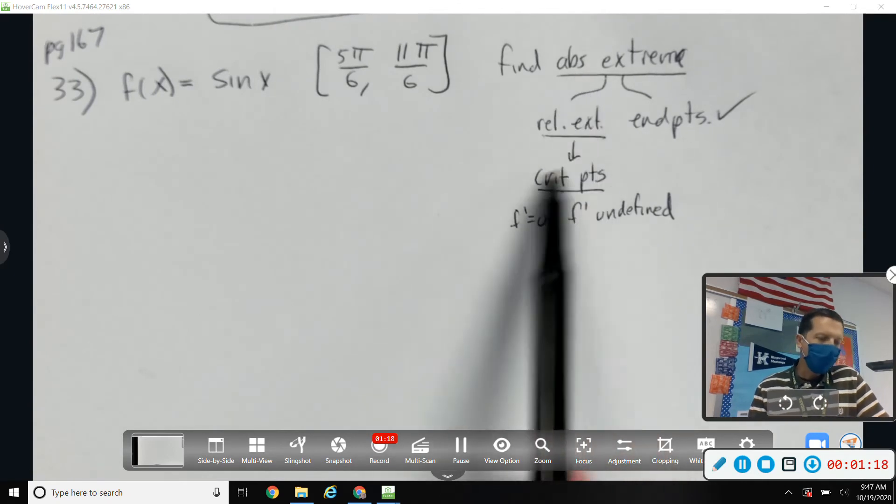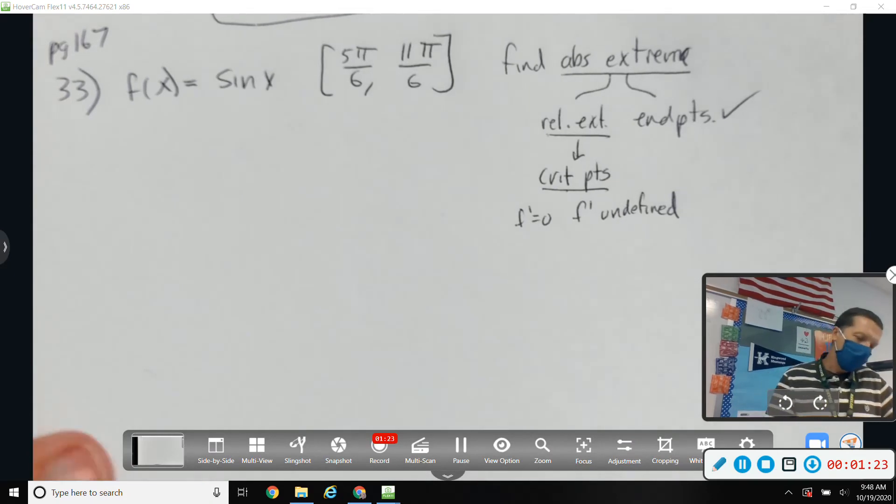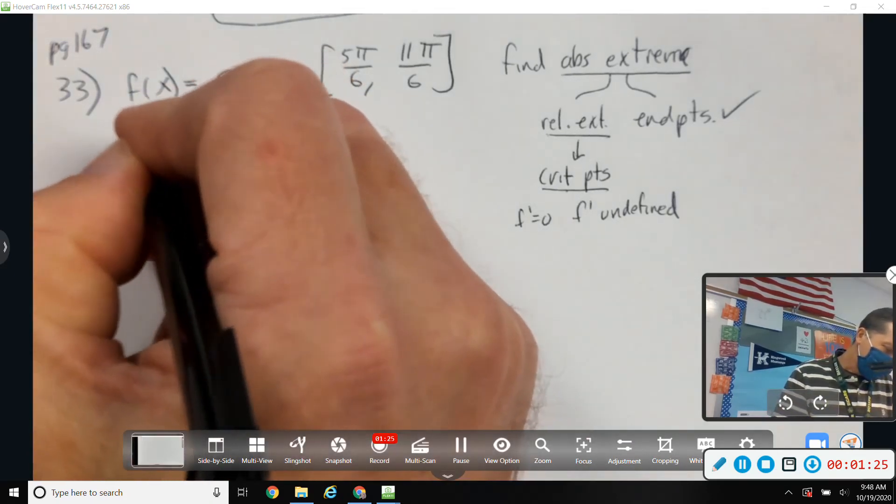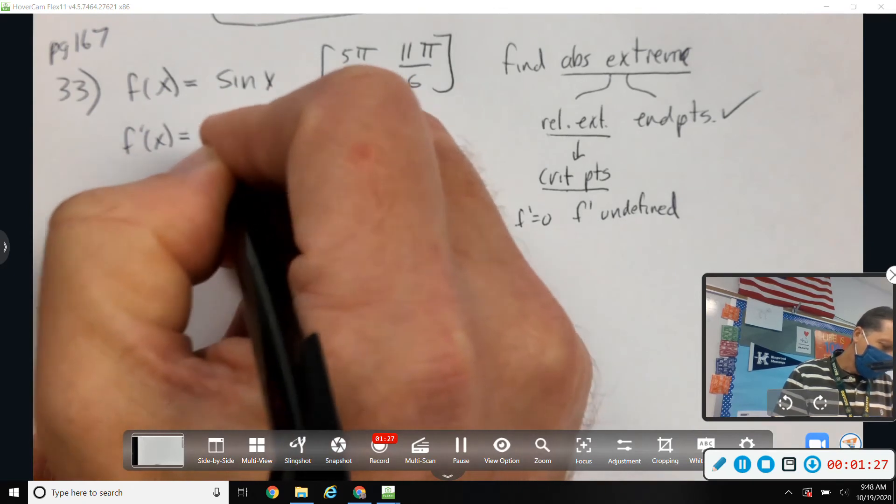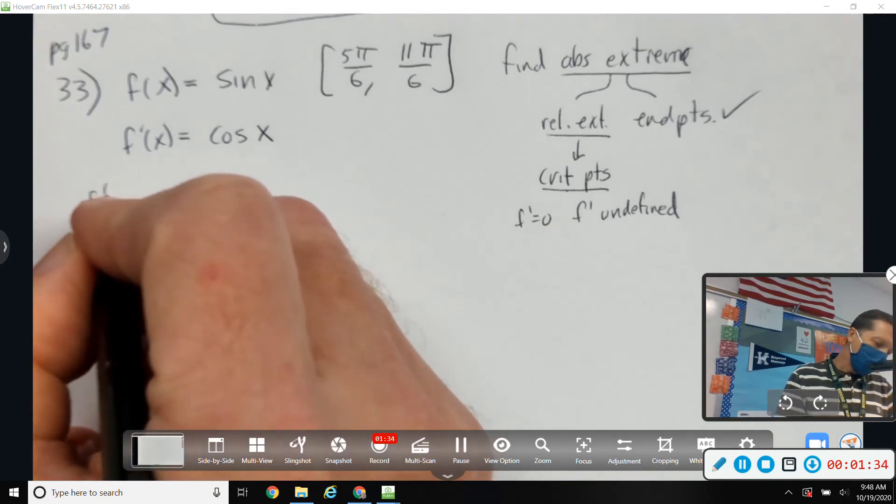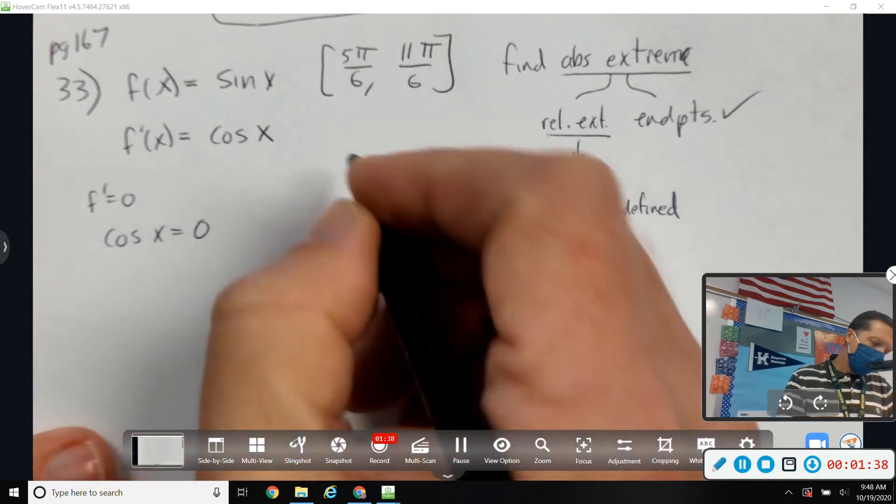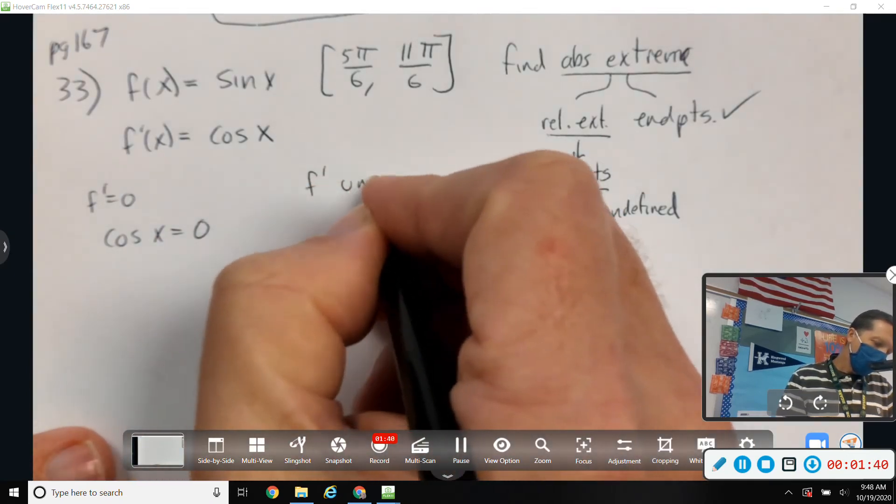But once we get critical points, we're just going to put them in a table of values and see who's highest and who's lowest. So f prime is cosine of x, and we want to see where f prime is equal to zero.